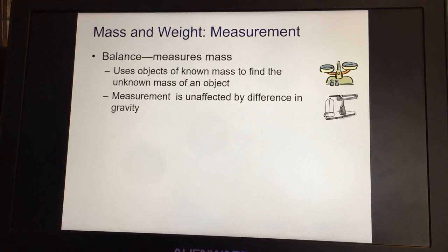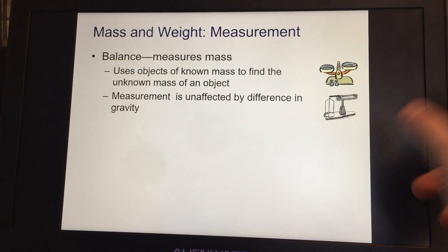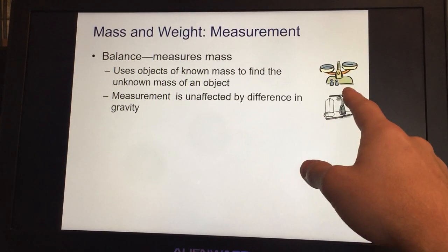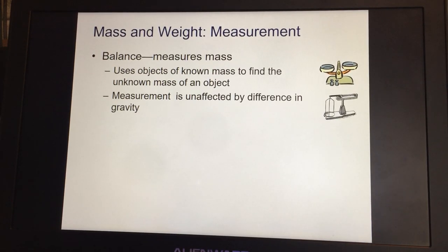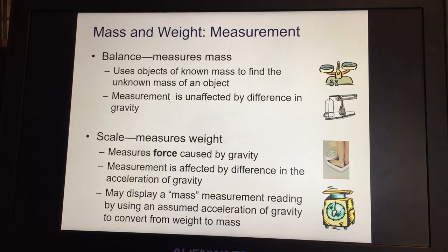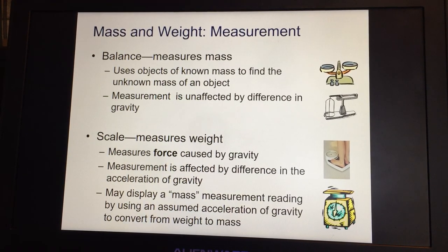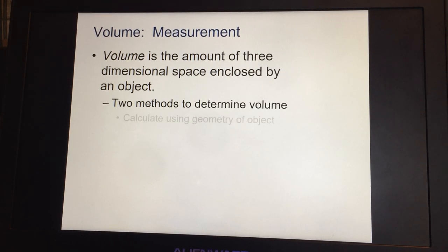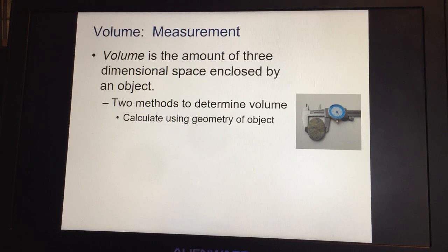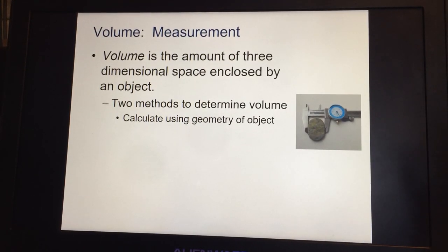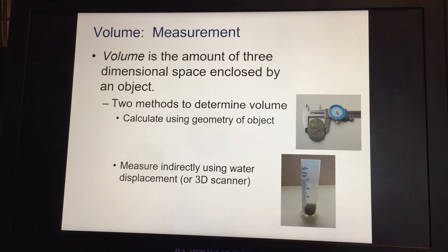A balance is used to measure mass — we use objects of known mass to find the unknown mass of an object, which you've likely seen in chemistry or physics. Scales are used to measure weight, measuring the force caused by gravity. Volume is the amount of three-dimensional space enclosed by an object. There are two methods to determine volume: calculate using the geometry of the object, or use water displacement or 3D scanners.